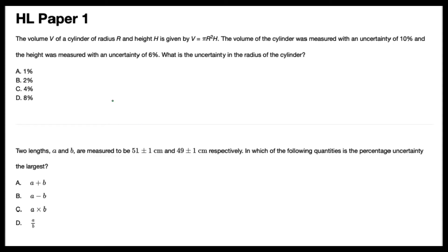The volume V of a cylinder of radius r and height h is given by V = πr²h. The volume of the cylinder was measured with an uncertainty of 10% and the height was measured with an uncertainty of 6%. What is the uncertainty in the radius of the cylinder?